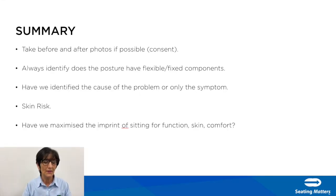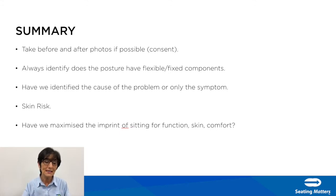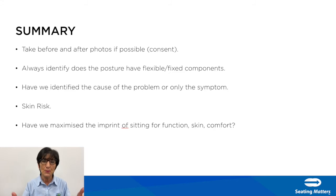In summary, take before and after photographs. We're also developing a patient passport showing how the person should be positioned, so caregivers and family know exactly how they want them seated. Always identify whether the posture has flexible or fixed components, whether we've identified the cause not just the symptom, whether we've looked at the skin, and whether we've maximised the benefit of seating for function, skin, and comfort. The person will only stay in the chair for an extended period if we've improved their function, looked after their skin, and improved their comfort.